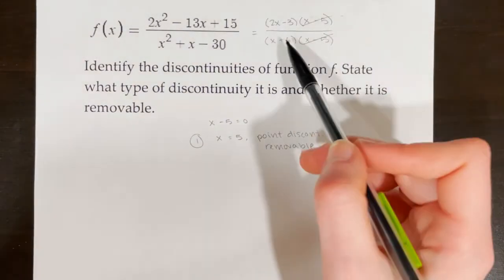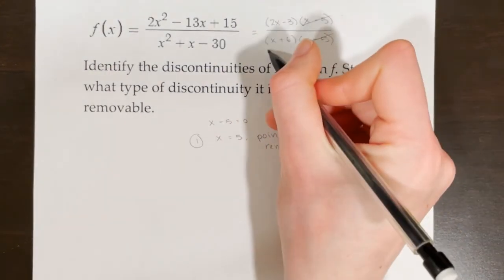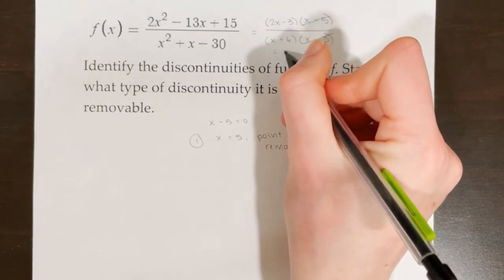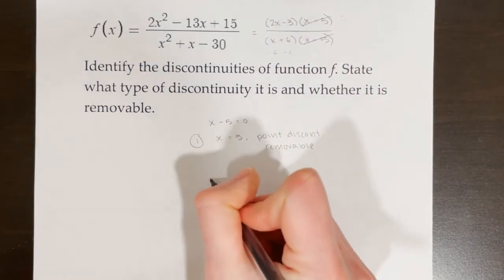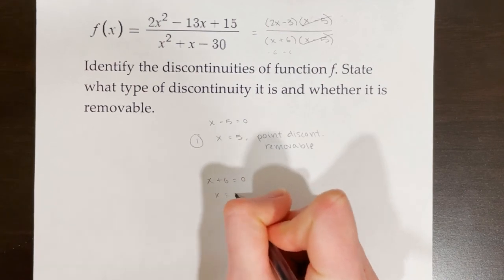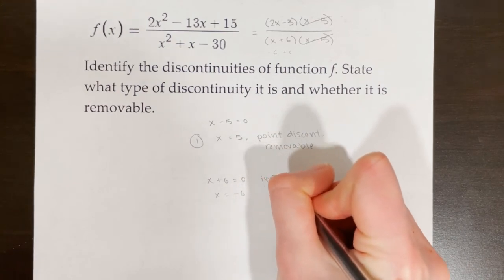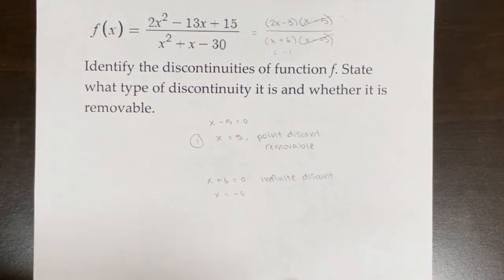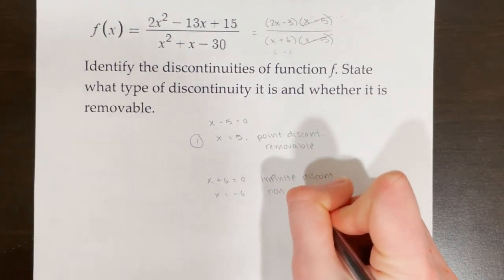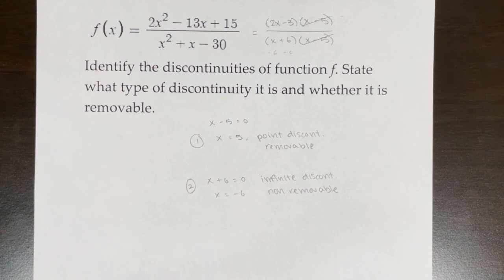But we actually have another discontinuity here. Looking at the function again, we still have x plus 6 in the denominator. If x equals negative 6, then negative 6 plus 6 equals 0 — and when we have 0 in the denominator it's undefined, meaning we have a vertical asymptote there. So at x plus 6 equals 0, or x equals negative 6, we have a vertical asymptote, which is known as an infinite discontinuity. Infinite discontinuities are non-removable, and that is our second and last discontinuity for this function.